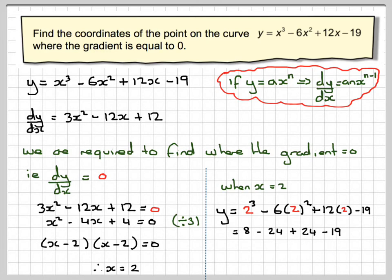The minus 24 and the 24 cancel out. 8 take away 19 gives me minus 11. So the coordinates will be 2 minus 11. x is 2, y is minus 11.